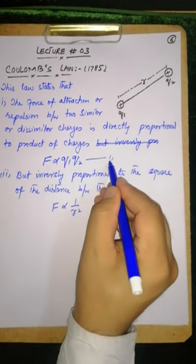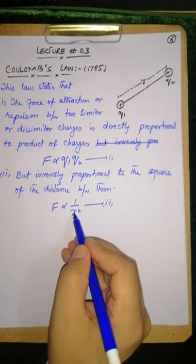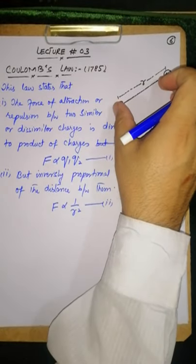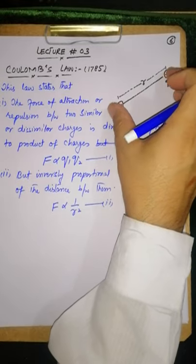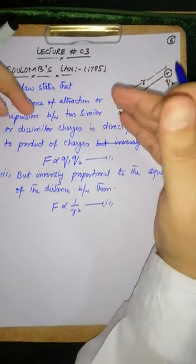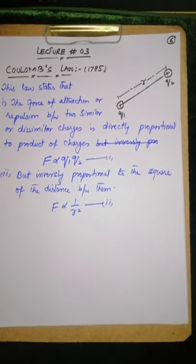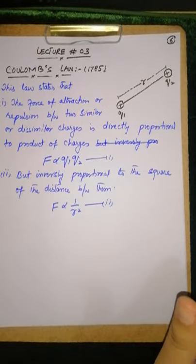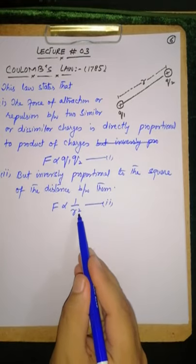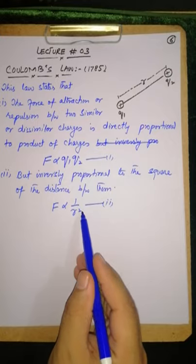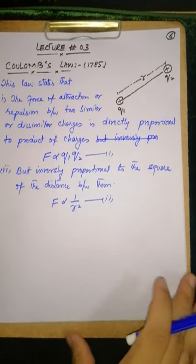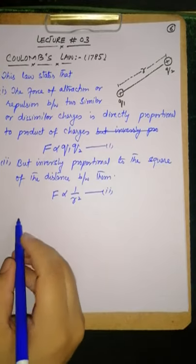If force depends on distance, one meter distance has force hundred newton, distance two meters then force becomes half. Not just inversely proportional to r, but inversely proportional to r square. This is what it means - inversely proportional to the square of the distance between them.